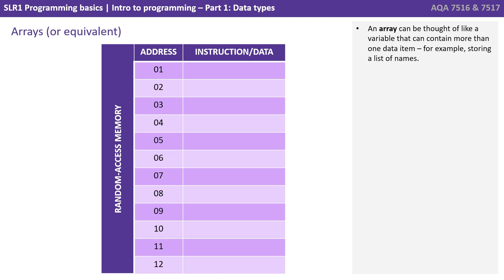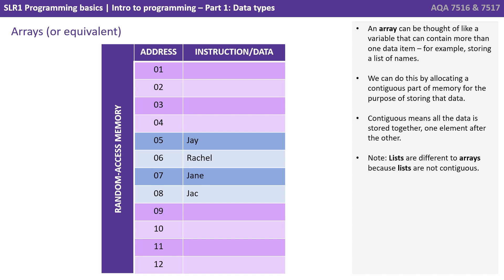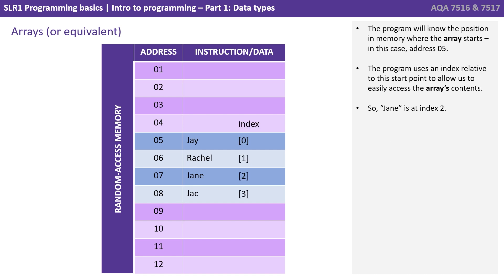Next, we're having a look at arrays. Now an array can be thought of like a variable that can contain more than one data item. For example, storing a list of names. We can do this by allocating a contiguous part of memory for the purpose of storing that data. Contiguous just means all the data is stored together, one element after the other. Note that lists are different to arrays because lists are not contiguous. The program will know the position in memory where the array starts, in this case address 05. The program uses an index relative to this start point to allow us to easily access the array's contents. So Jane here is an index 2. Now notice that's the third position in the array, because typically arrays are 0 indexed.